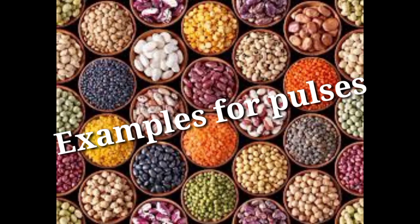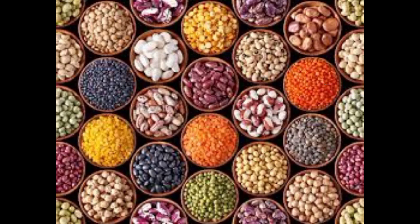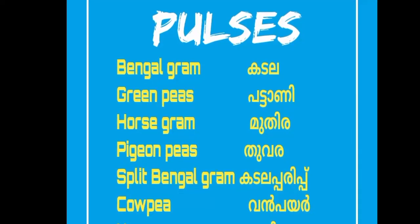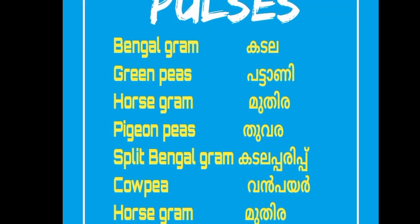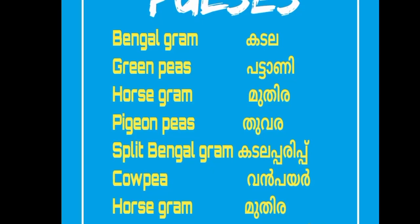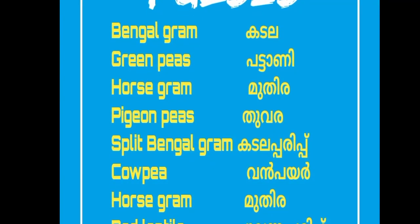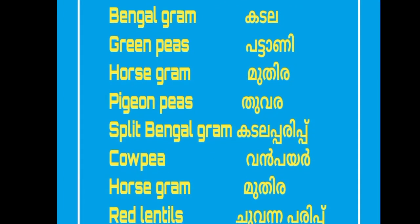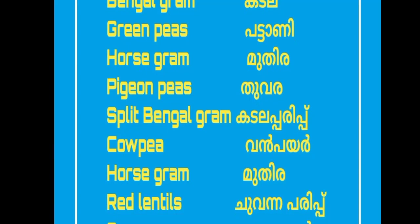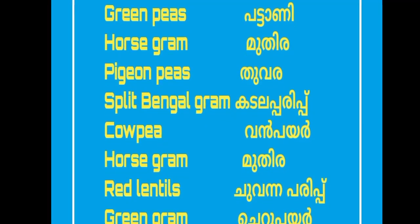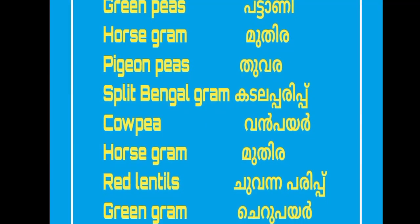Examples of pulses: Bengal Gram (Kadala), Green Peas (Pattanikadala), Horse Gram (Mudira), Pigeon Peas (Tuvara), Split Bengal Gram (Kadala Parippu), Kauppi.